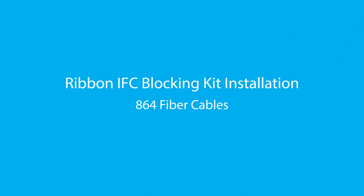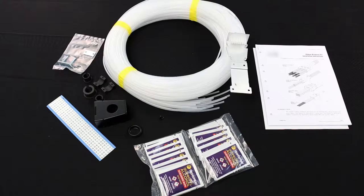This video will demonstrate how to install the BLK-RCT blocking kit onto a central tube ribbon cable. The configuration demonstrated in this video is an 864 fiber cable installed into an 18 tube blocking kit, but this process is applicable to other cable and blocking kit sizes as well.